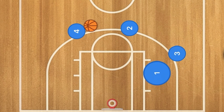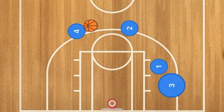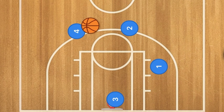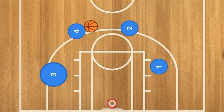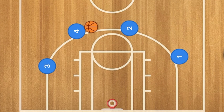If not open for the layup, he will continue on and screen for player 3, because player 3 would be the next one away. Player 3 will then cut across the key — he may be open — and pop out to the 3-point line where he may be open again. And that is the 4 out screen away basketball play.